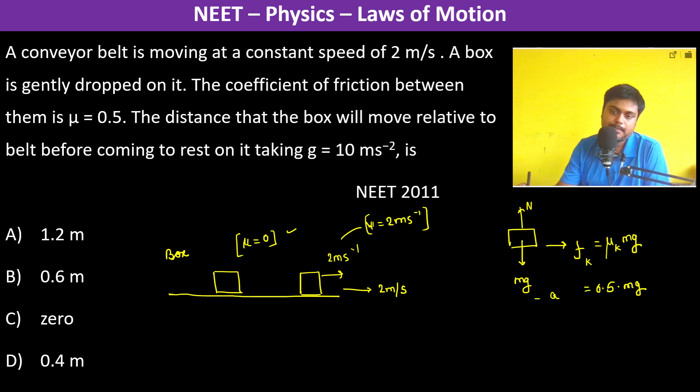Since friction acts in the forward direction, the acceleration equals fk divided by mass, which is 0.5g = 5 meters per second squared.